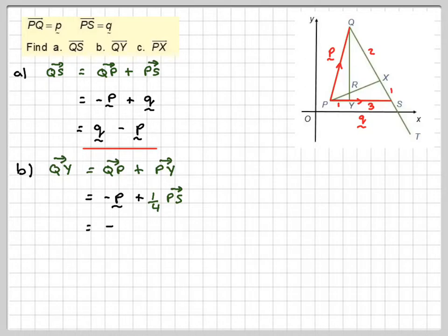And PS is q, so that will be minus p plus a quarter of q. We would write that now as a quarter q minus p.